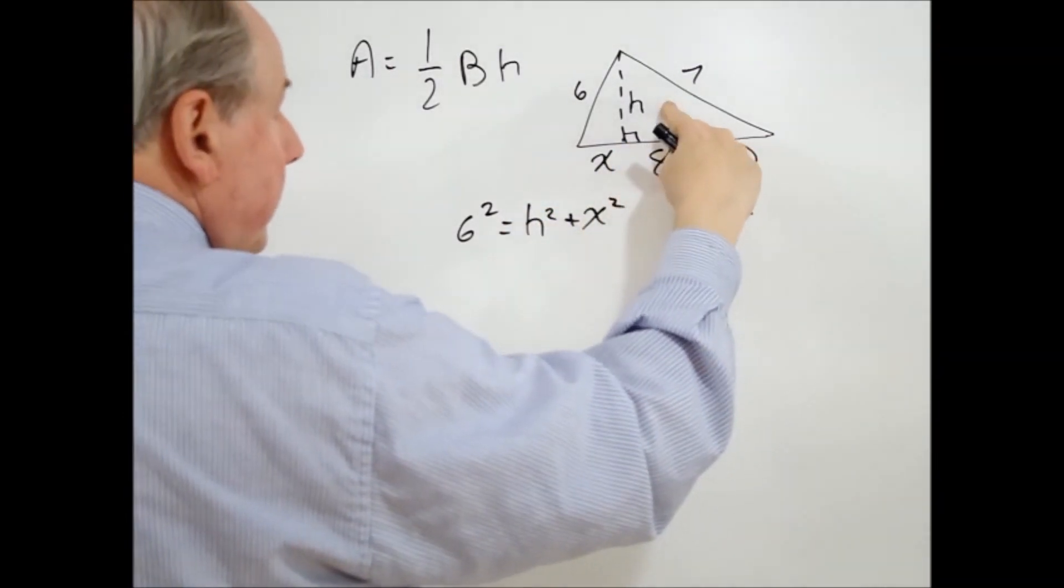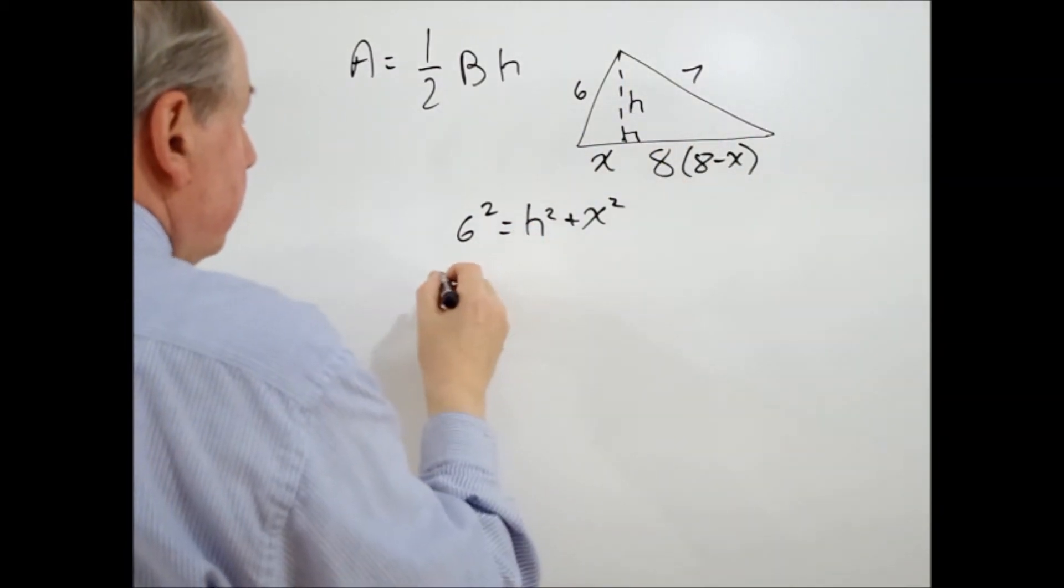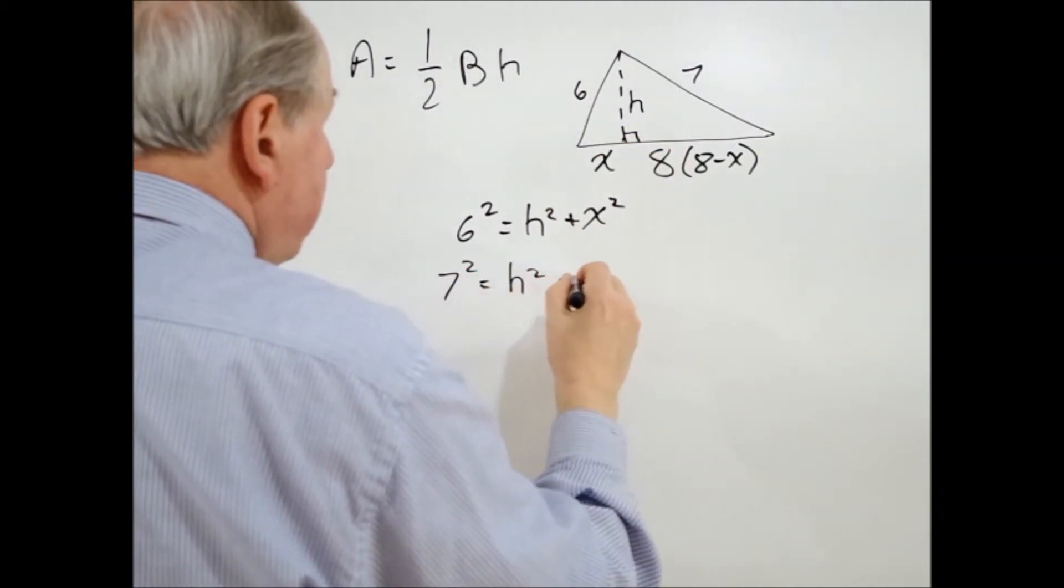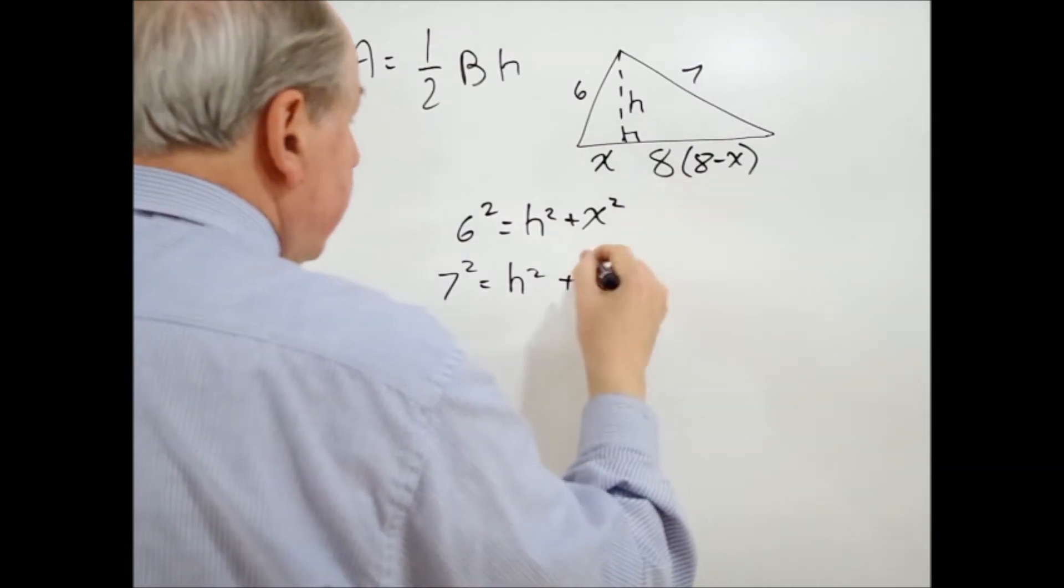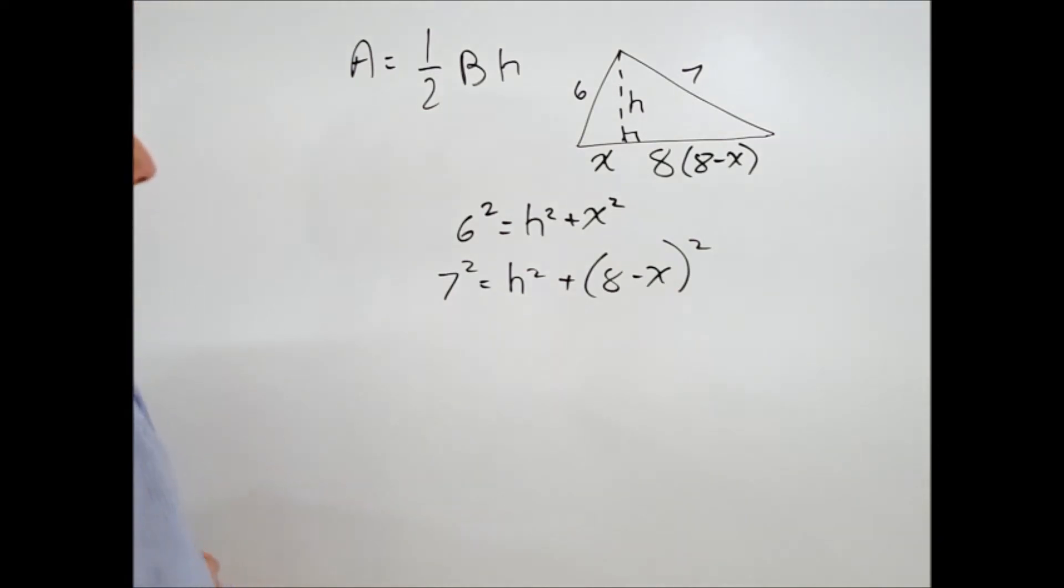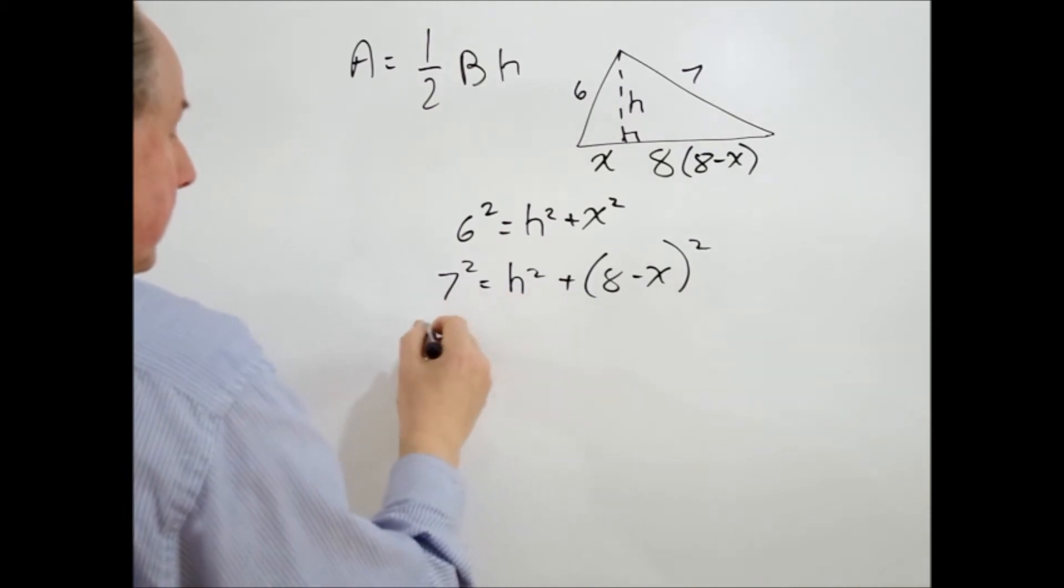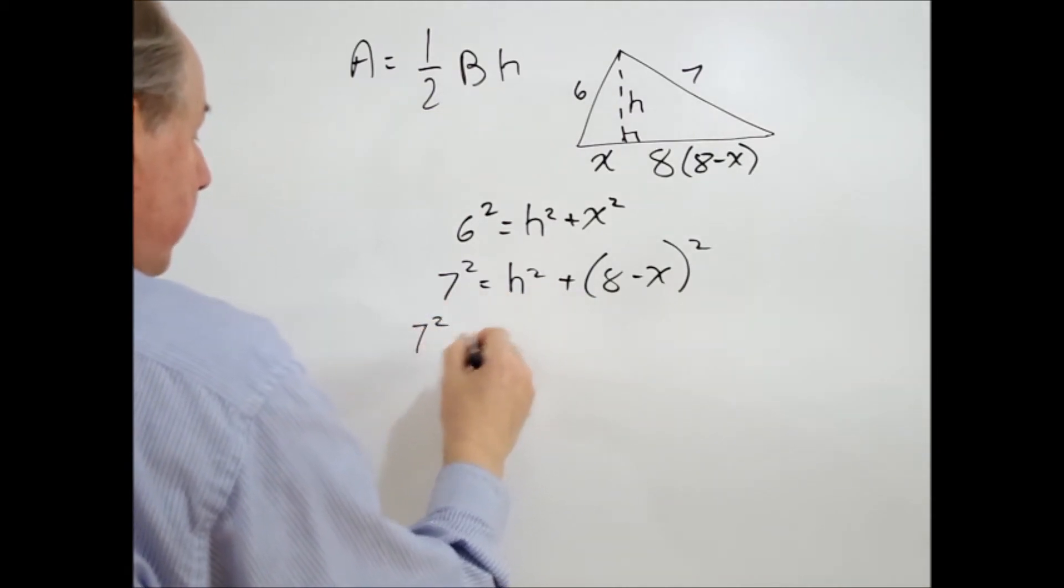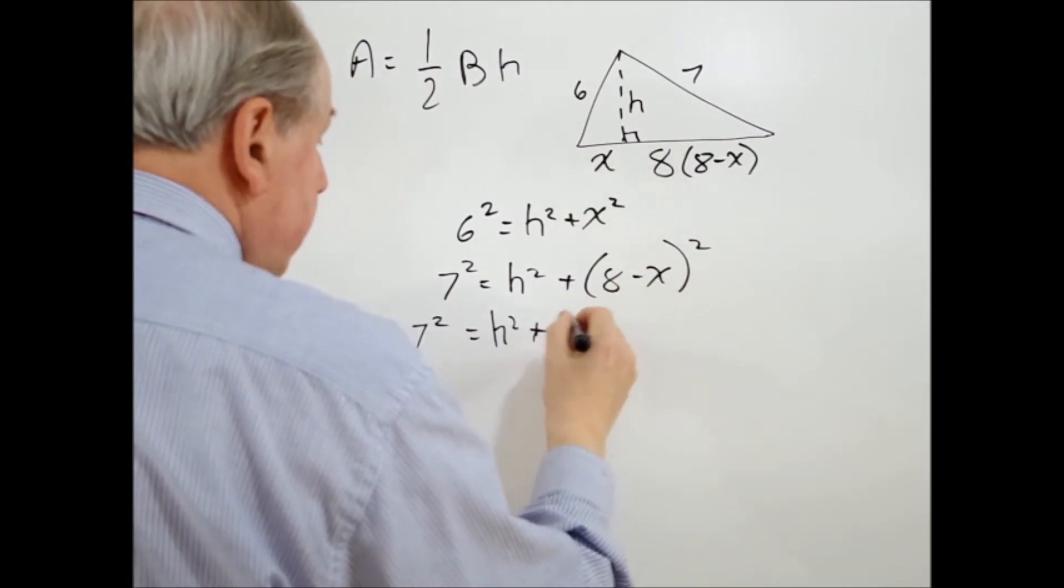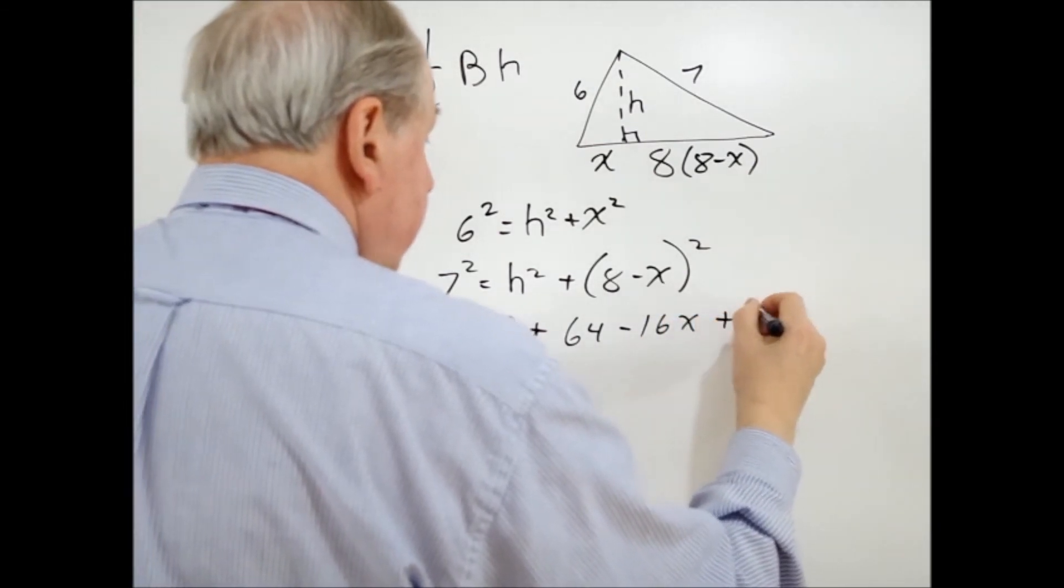In this next triangle here, on the right hand side, we can apply the Pythagorean theorem to that as well, which would be seven squared equals H squared plus eight minus X all squared. And the next step would be to expand this out. So we'll just do this next equation. We'll leave it as seven squared equals H squared plus eight times eight squared is 64 minus 16X plus X squared.